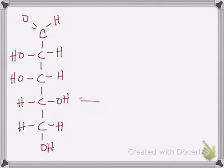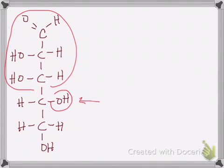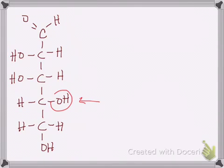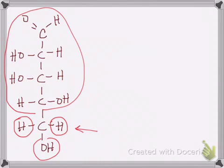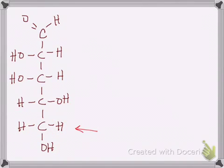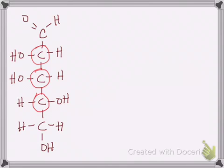Looking at the fourth carbon, we have that group, that big group, that group, and that group — again none of the four are the same, so that one is chiral as well. The final carbon has a hydrogen here and a hydrogen there, so it's achiral right off the bat — two groups are the same. So in this structure we have three chiral carbons: carbons two, three, and four. The other two are achiral. If you're looking for more carbohydrate videos, there's a link below covering other topics in carbohydrate chemistry.